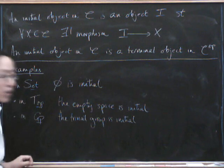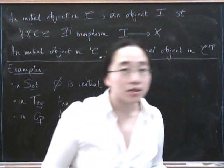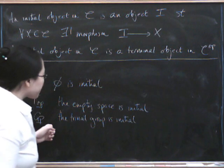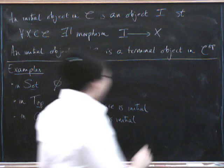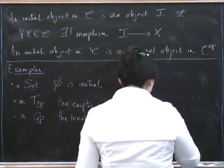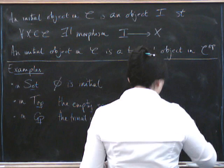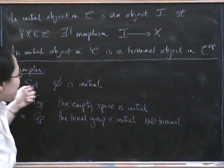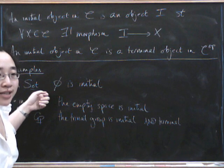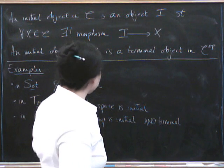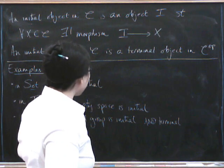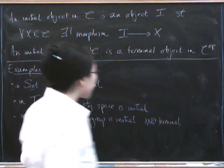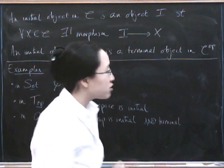And remember, the trivial group was also terminal. So, in fact, in groups, the trivial group is initial and terminal. This is not always the case, right? In set, it was a one element set that was terminal, and it's the zero element set that is initial. And so, in set and top, they're different, whereas in groups, they happen to be the same. This is actually a very useful property about groups.